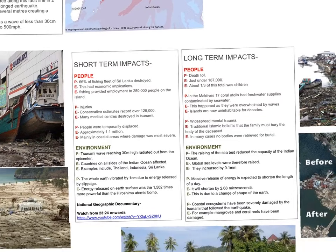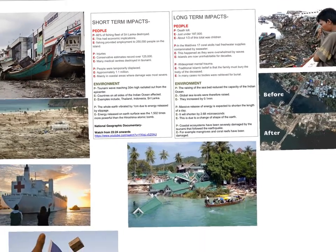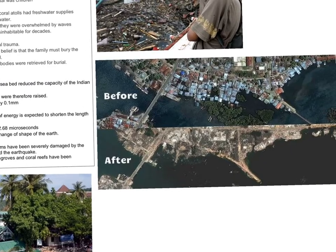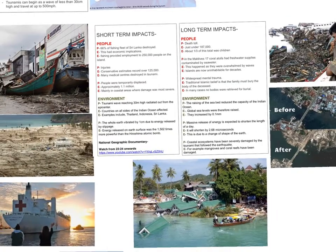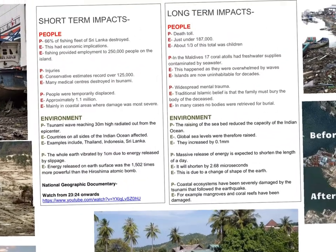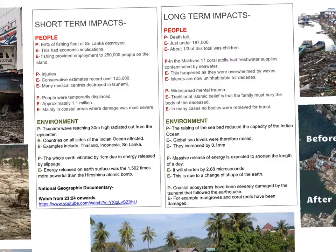Moving down now to the impacts, you can see some images here. We can see the before and after on a section of the Sumatra coastline showing the extent of the damage. We are going to break our impacts into short-term, long-term, and within that, people and environment. These are the same as the notes in your e-book, broken down into Point Evidence Explained. We are trying to include figures throughout and developing our points to maximise the marks. You could be asked a simple 4-mark question or it could be incorporated into a longer 8- or 9-mark question. Be very aware of what they are asking for in terms of short-term, long-term, people, or environments.